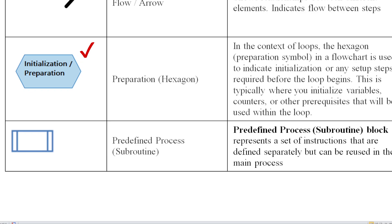The hexagon is especially used for loops. In loops, you use it to initialize a variable. For example, for i equal to 1 to n — you can use the hexagon-shaped symbol to represent the initialization or loop preparation step.